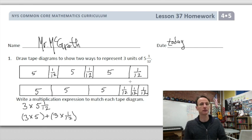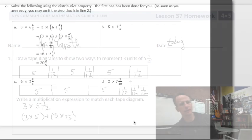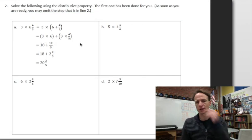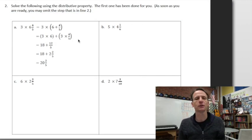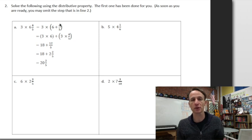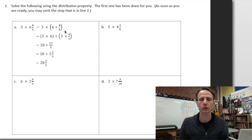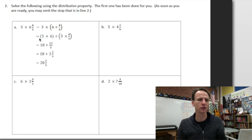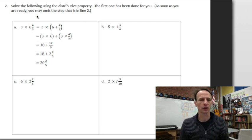Okay, so this first one is saying hey we have five and one-twelfth three times, and the second one is saying we have three times five and then three times one-twelfth. And that'll be it for number one. Let's roll on. In number two we're going to do as we did in that first one but actually solve them using the distributive property.